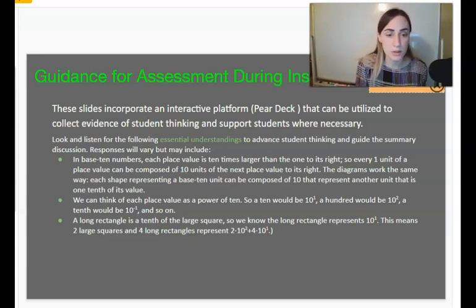To help reinforce what it says in this first bullet, which is that in base 10 numbers, each place value is 10 times larger than the one to its right. So every one unit of place value can be composed of 10 units of the next place value to its right. In other words, we move one unit over of place value, we are 10 times greater. We move one unit in the opposite direction, we take a tenth. And that language is much richer and much better to reinforce than to say we're moving the decimal place. You want to focus on the idea of, well, we're changing where the digit is, which changes the place value instead.